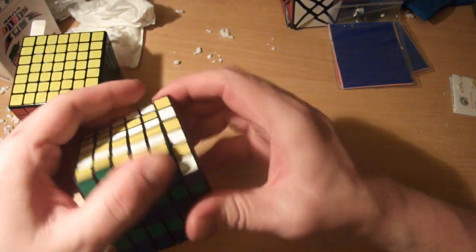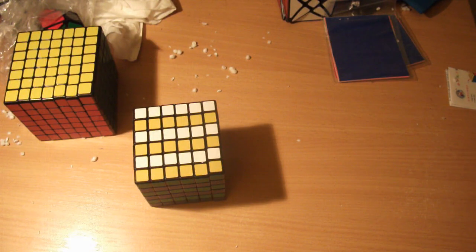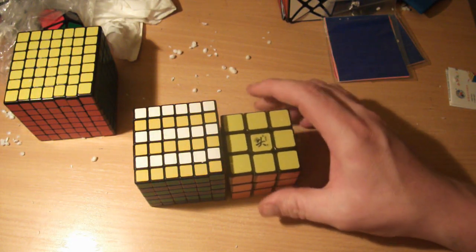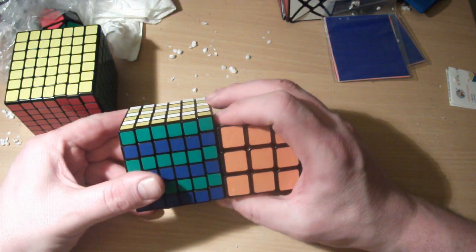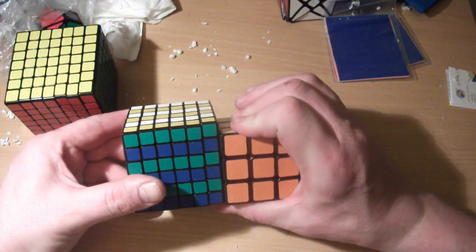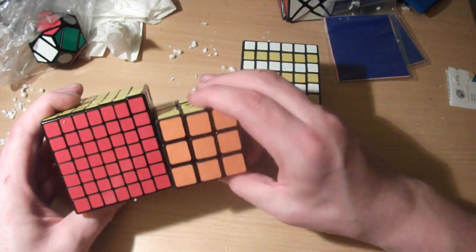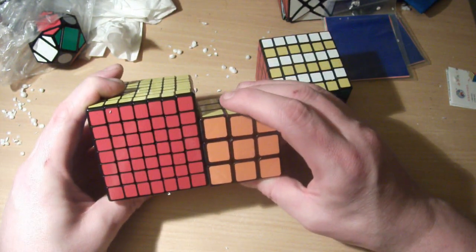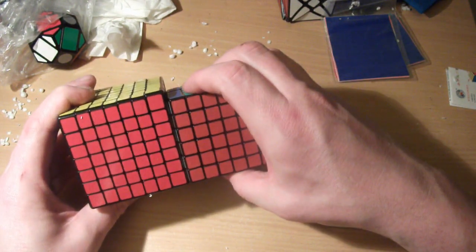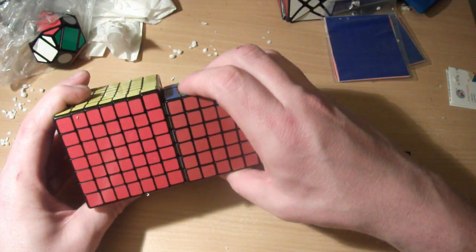I think what I might just do is a quick comparison size-wise with the other puzzles in the series. So here's a standard 3x3, a Dayan Guhong. As you can see, the 6x6—five of the layers match up to three of the standard 3x3. And the 7x7's a little bit bigger than that, so just one two layers bigger. As you can see next to each other, the cubies on the 7x7 are ever so slightly smaller, it seems, than the 6x6.